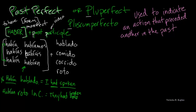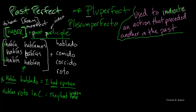Alright, so that's how we form it: we're going to take a form of haber in the imperfect tense and add a past participle. But the question is when do we use the pluscuamperfecto? The pluscuamperfecto is used to indicate an action that preceded or came before another action, and all of this is happening in the past.